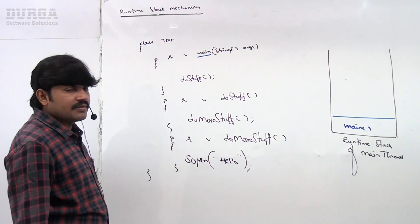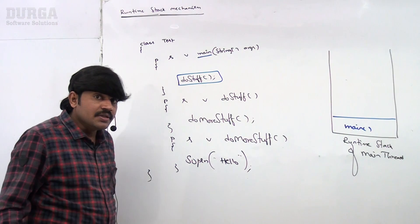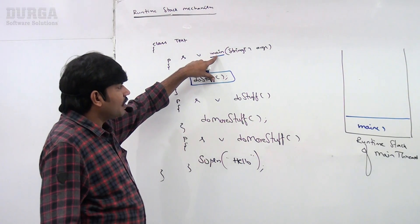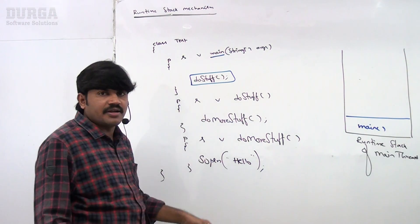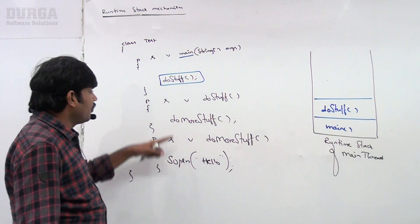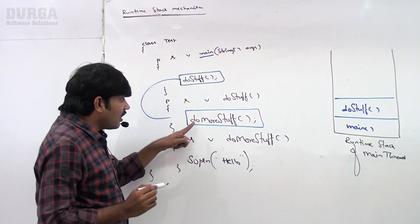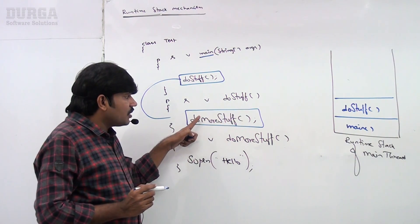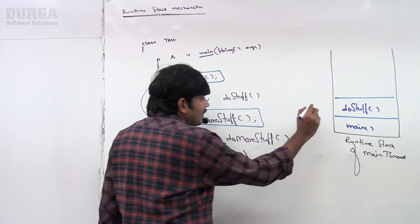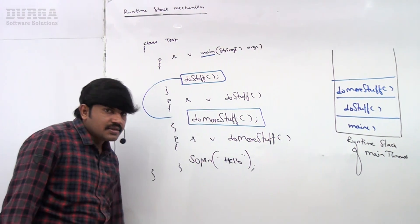One entry will be stored in the stack for main method. As part of main, it is calling doStuff. doStuff will also be executed by the main thread, because there is only one thread. So for the doStuff method call, one entry will be stored in the corresponding stack. Then as part of doStuff, it is calling doMoreStuff — for this method call also, one entry will be stored inside the stack.